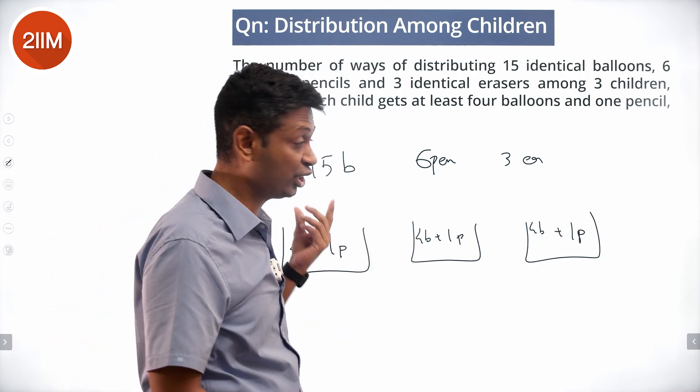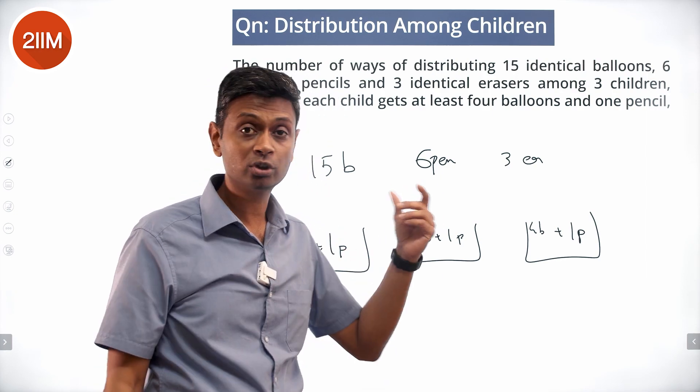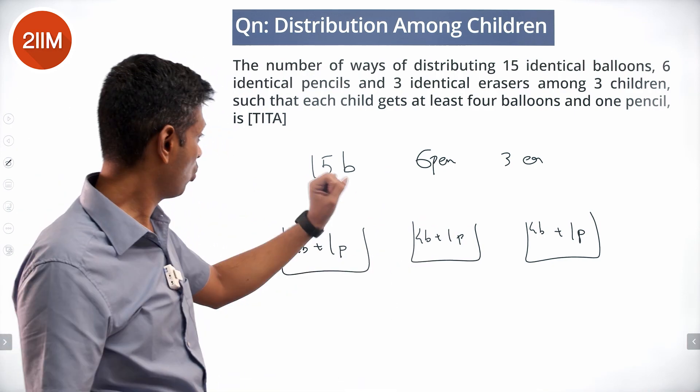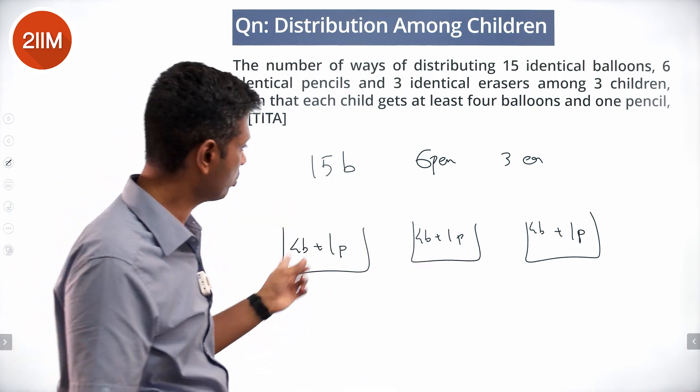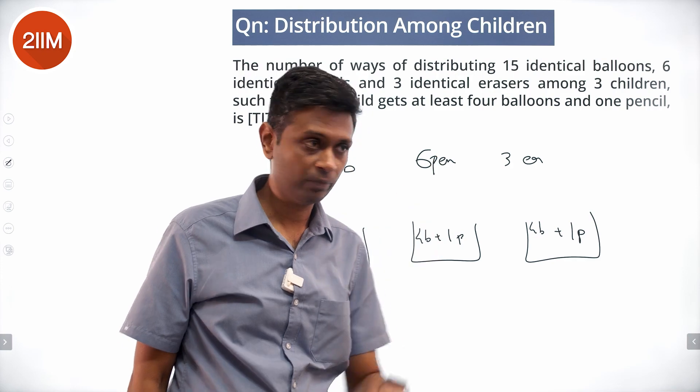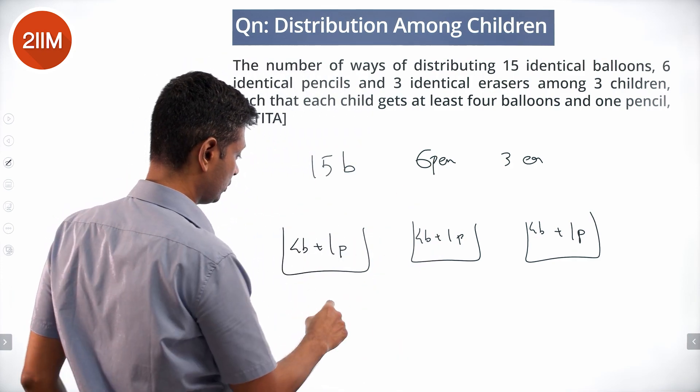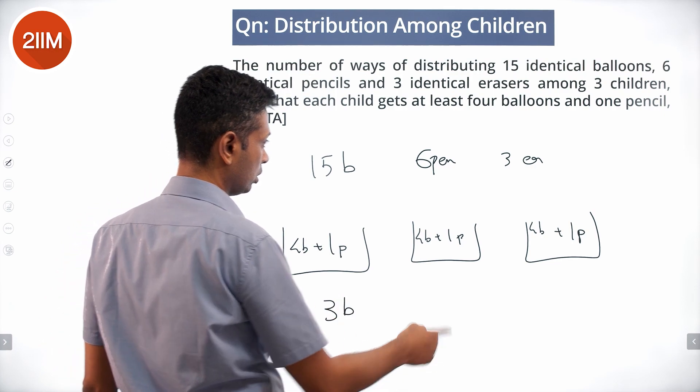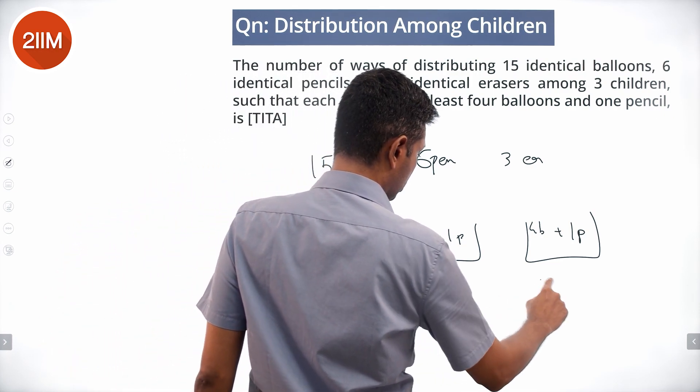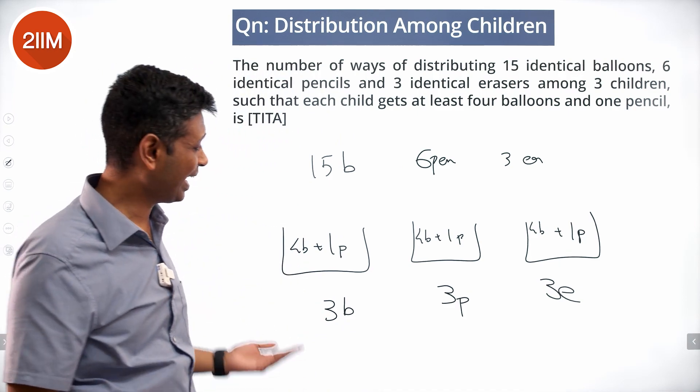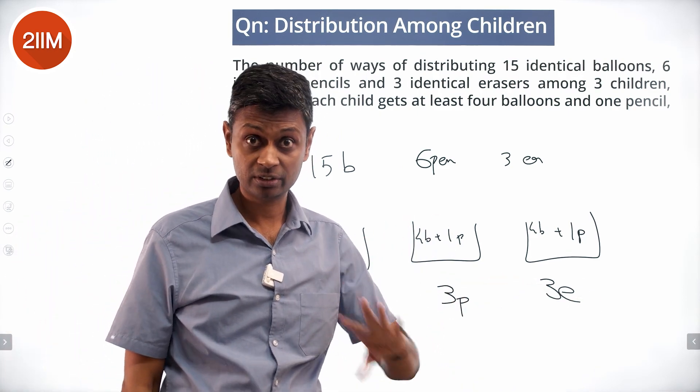The balloons are indistinguishable, so too are the pencils, so too are the erasers. So out of this you could select any 4, any 4, any 4, given away. 1, 1, 1 given away. So 4 plus 4 plus 4, 12 out of the way. 1 plus 1 plus 1, 3 out of the way. That means after doing this we have 3 balloons, 3 pencils, 3 erasers. Practically we only have this to give away, not anything else.